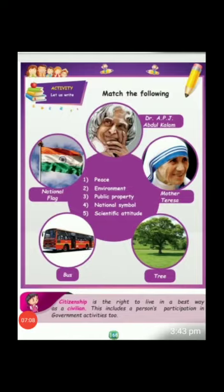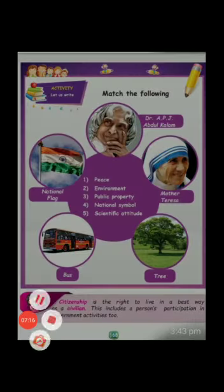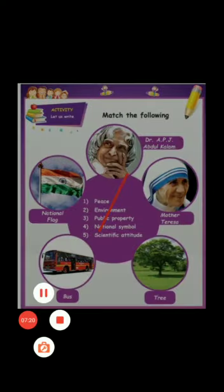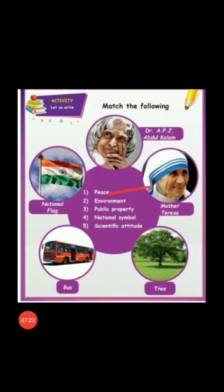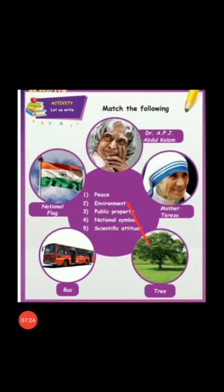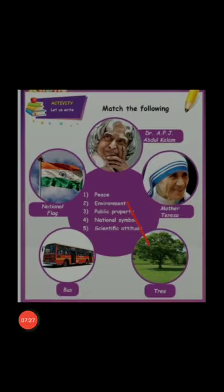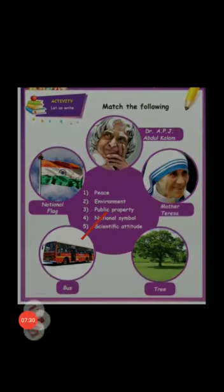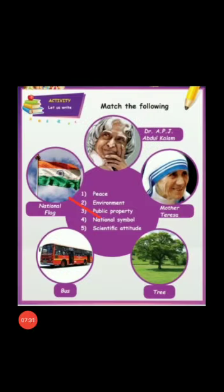Activity: Let us write. Match the following. See the picture and match the suitable one. Dr. APJ Abdul Kalam — Scientific Attitude. Mother Teresa — Peace. Tree — Environment. Bus — Public Property. National Flag — National Symbol.